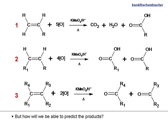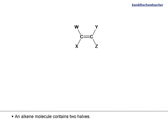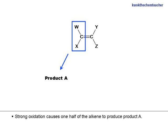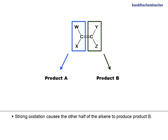But how will we be able to predict the products? An alkene molecule contains two halves. Strong oxidation causes one half of the alkene to produce product A, and strong oxidation causes the other half of the alkene to produce product B.